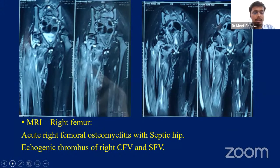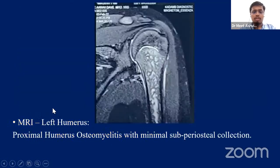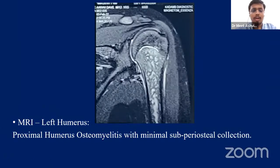We had earlier performed radiographs for this patient and the X-rays were normal. Proceeding with our second patient, we performed an MRI of the left humerus and there was proximal osteomyelitis with, as we can see, minimal subperiosteal collection.